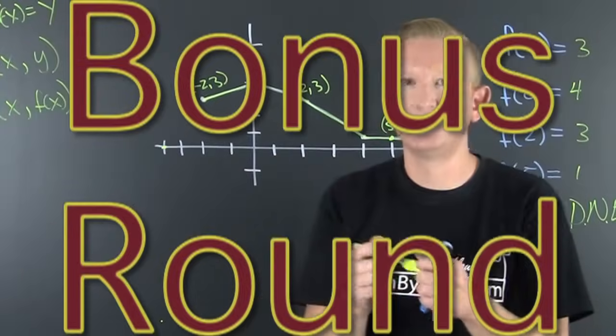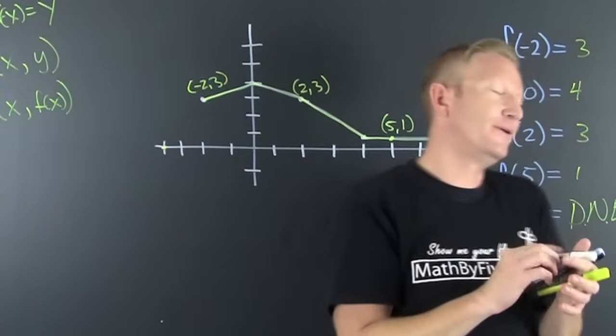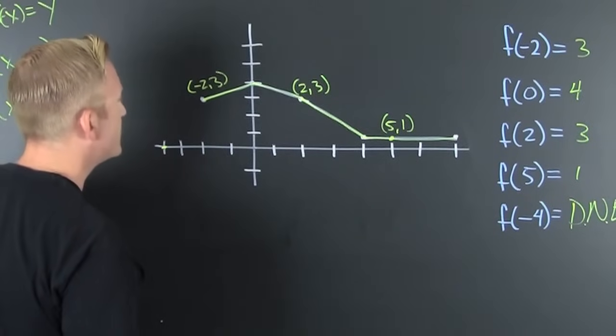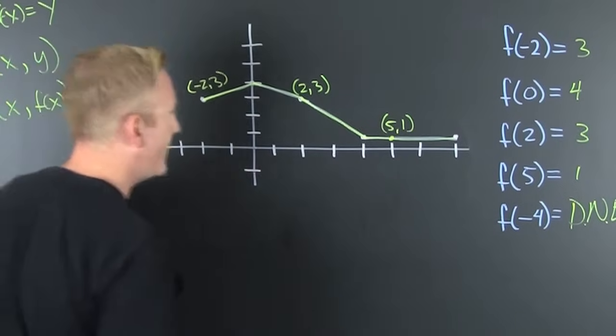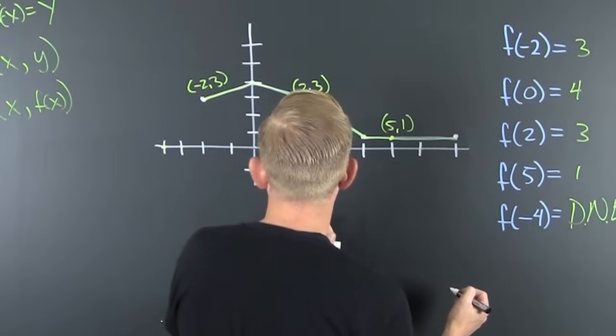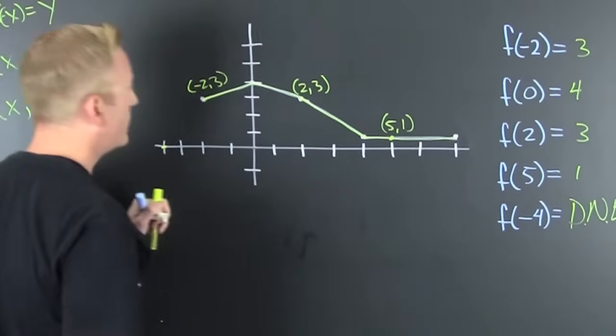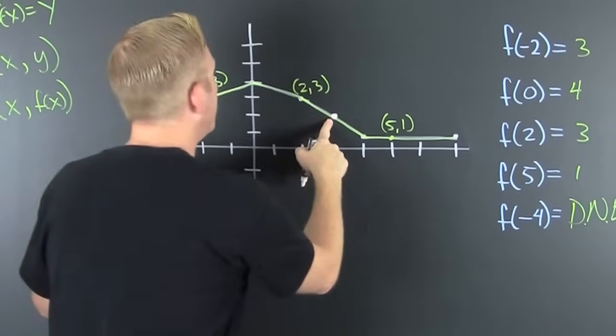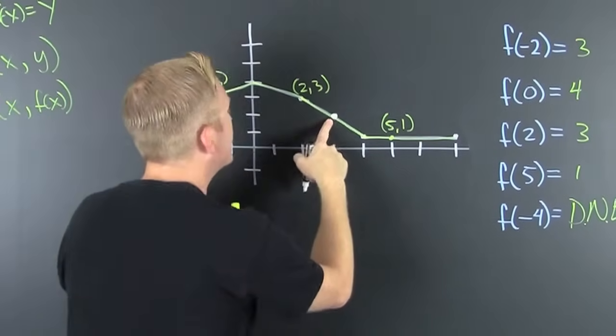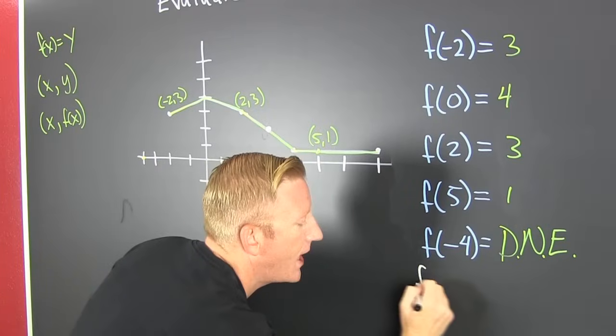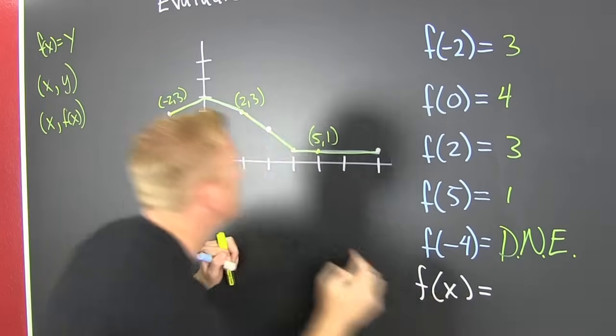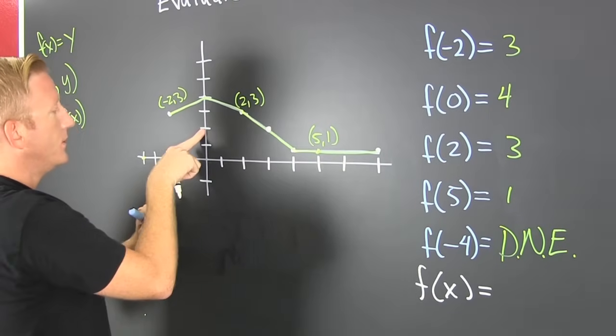Bonus round. What's this bonus round? This bonus round is what I found. I'm looking at this point right here. That point right there is going to be fine. This time I want to find the x value when y is equal to 2.